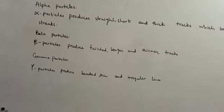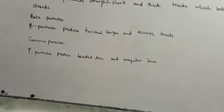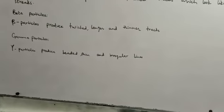Beta particles produce twisted, longer and thinner tracks. Gamma particles produce beaded, thin and irregular lines.